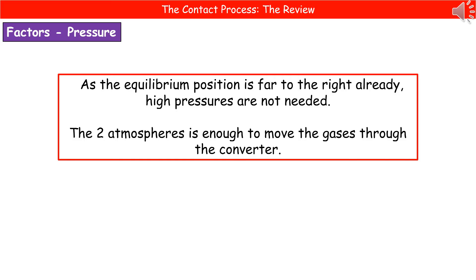As we've already mentioned, stage two is a reversible reaction. Therefore, we need to consider the conditions carefully to maximize our yield. What we actually find in this example, the equilibrium position is already far to the right. So we don't need high pressures to push it further to the right. The two atmospheres is enough to move the gases through the converter.